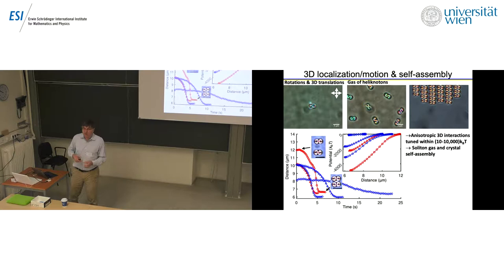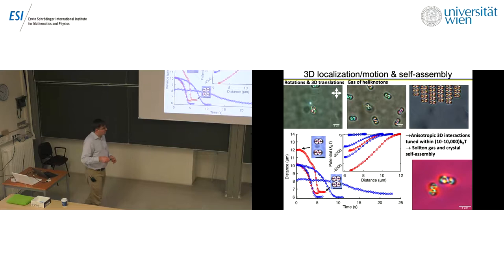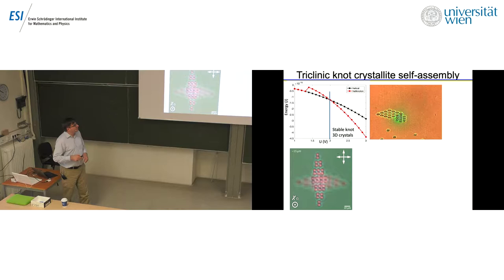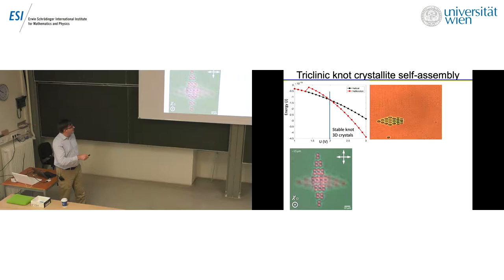These structures are three-dimensionally localized, and here you can see us taking laser tweezers and moving them around. Under different conditions, they can form a gas of heliknotons where they weakly interact with each other. As you change the applied voltage, you can see them crystallizing and forming crystals. We can tune the interaction potential between heliknotons to range from just a few kBT to several thousands of kBT. Moreover, the interactions are also highly anisotropic, and this anisotropy can also be tuned. These interactions are three-dimensional in nature — you can see two heliknoton soliton particles interacting in three dimensions, moving and rotating. We find that they self-assemble into three-dimensional lattices.